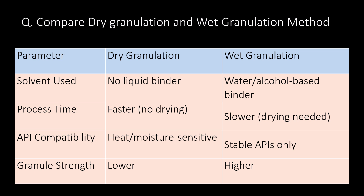A very frequently asked question: compare dry granulation and wet granulation. You can refer to the table below to compare them. The important parameters are solvent used, process time, API compatibility, and granule strength. For solvent used: in dry granulation, no liquid binder is used, whereas in wet granulation, water or alcohol-based binders are used.